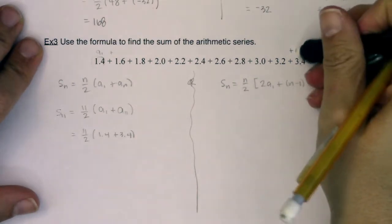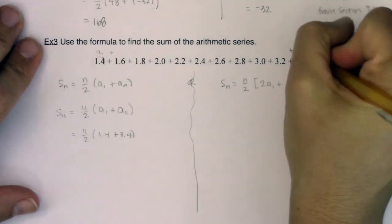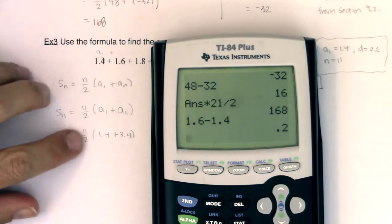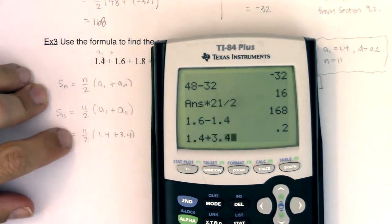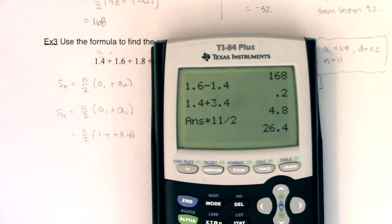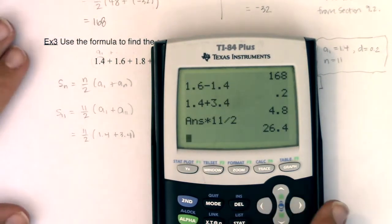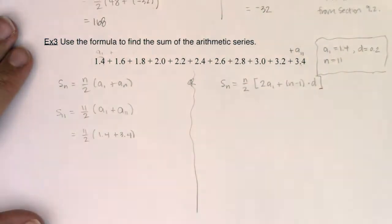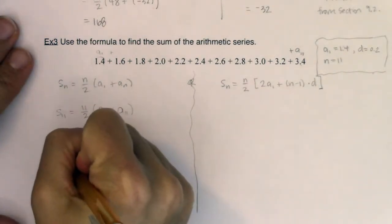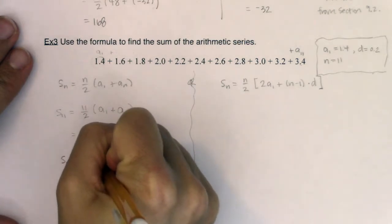You can see I'm writing this as a_sub_n, but you know this is a_sub_11. Let me crunch this on my calculator: 1.4 plus 3.4 in the parentheses first, then multiply by 11 halves, and it looks like I'm getting 26.4. So s_sub_11 equals 26.4.